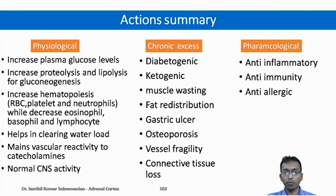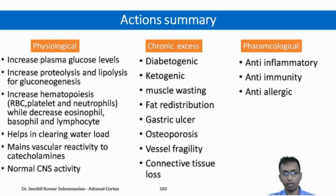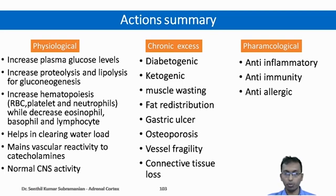To summarize the actions of cortisol: physiological actions include increased plasma glucose, increased proteolysis and lipolysis for gluconeogenesis, stimulation of hematopoiesis (increased RBC, platelets, and neutrophils; decreased eosinophils, basophils, and lymphocytes), clearance of water load, maintenance of vascular reactivity to catecholamines, and essential for normal CNS activity. Chronic excess levels are diabetogenic, ketogenic, cause muscle wasting, fat redistribution, gastric ulcer, osteoporosis, capillary fragility, and connective tissue loss. At pharmacological doses, cortisol is used for anti-inflammatory, anti-immunity, and anti-allergic conditions.